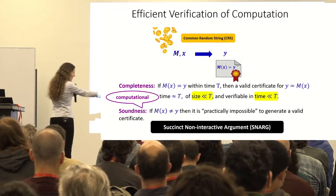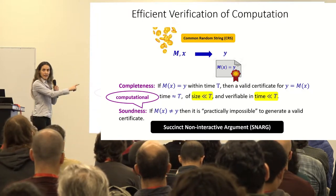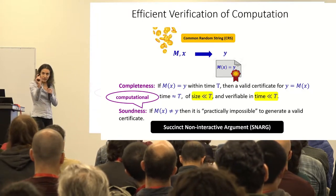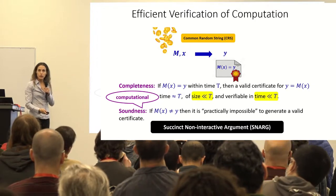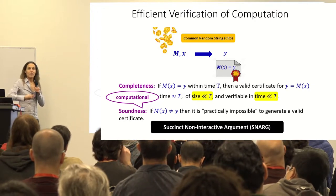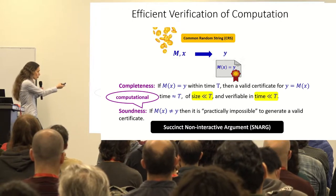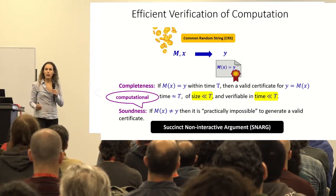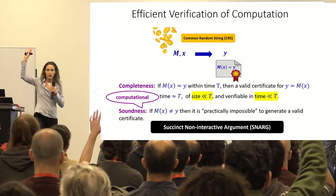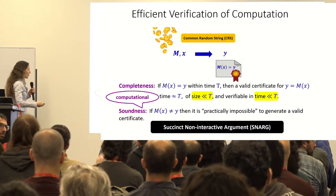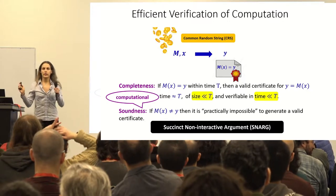This is called a Succinct Non-Interactive Argument — a SNARG. It's non-interactive because it's just a certificate. We call it an 'argument' rather than a 'proof' because it's computationally sound rather than statistically sound. How many people have heard the buzzword SNARG? Our goal is to construct these SNARGs.